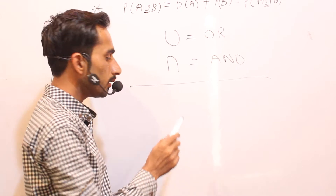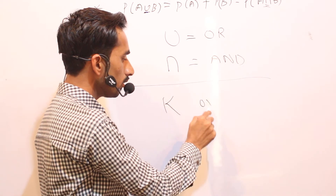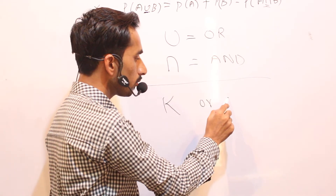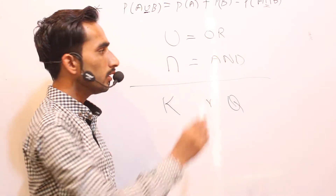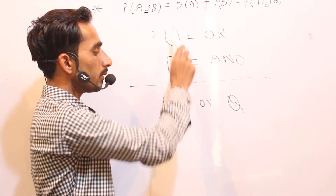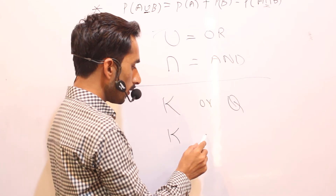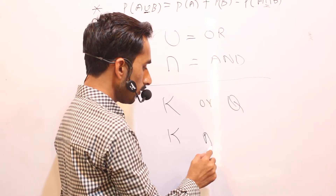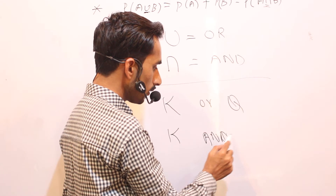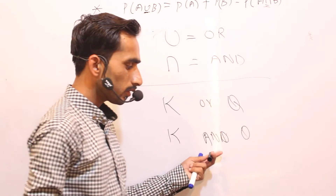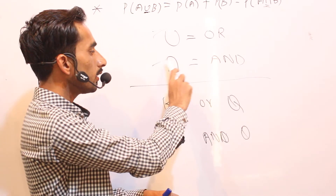For example, find the probability of king or queen from a deck of cards. Here, when we say 'or,' we are talking about union. When we say 'king and queen,' we are talking about intersection.